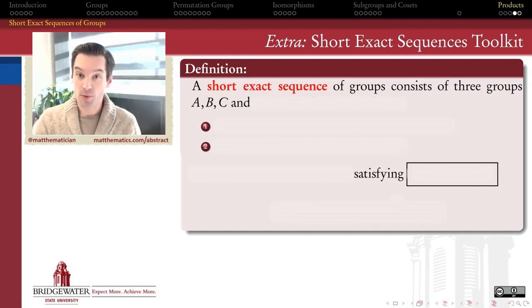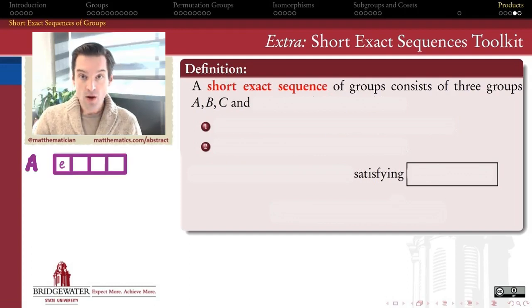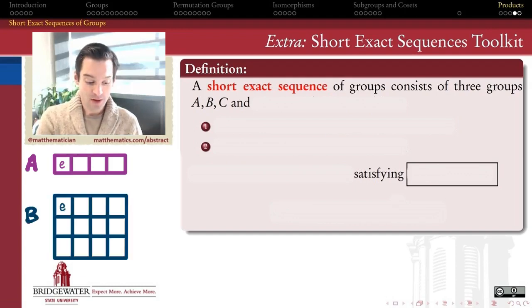How a Short Exact Sequence works is it consists of three groups A, B, and C. We're going to think of the role that the group A plays as being like this first row in the Lagrange theorem table. So we're going to kind of think of A as being a subgroup inside of B, in a sense.